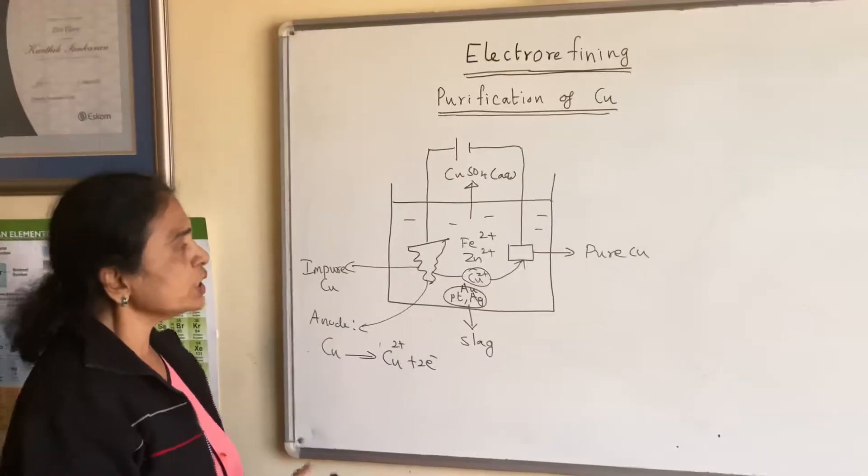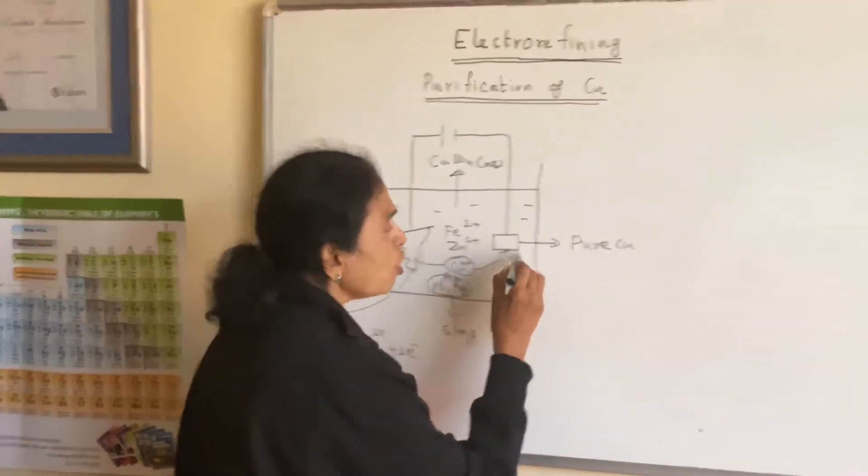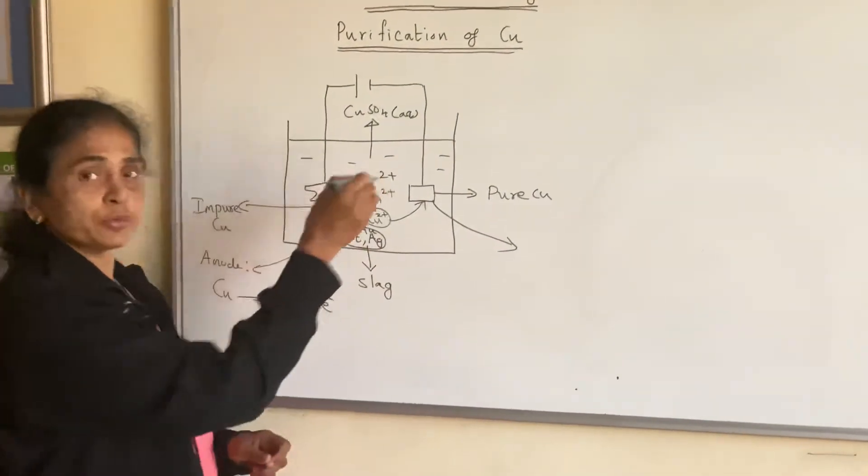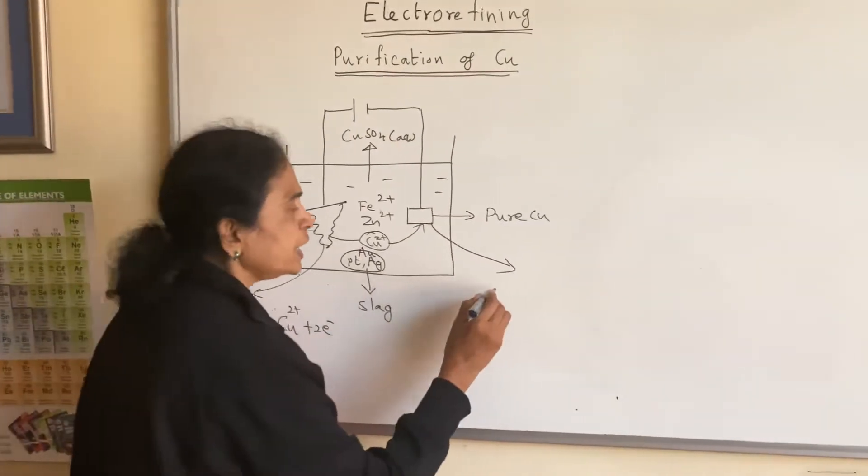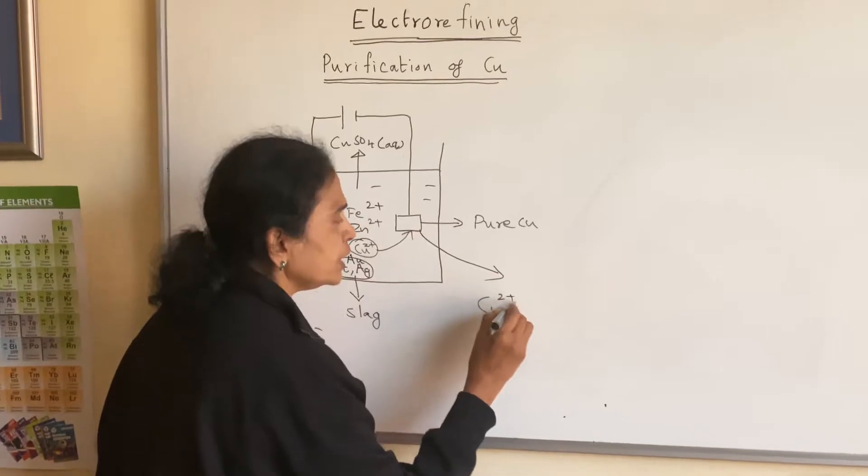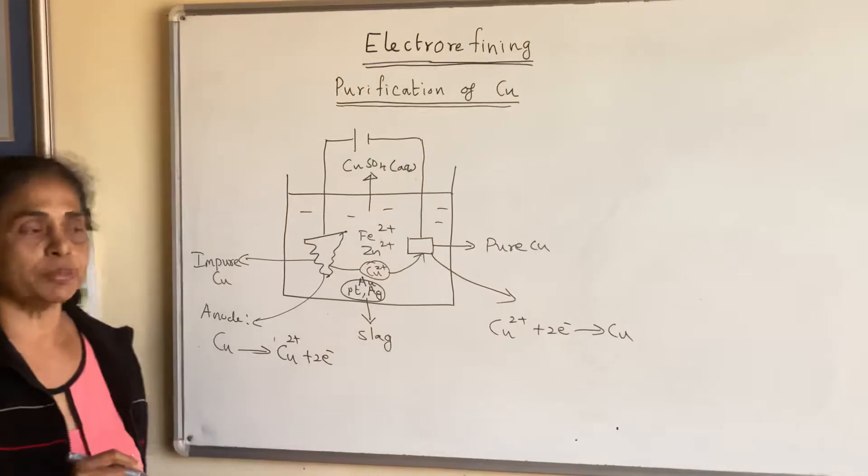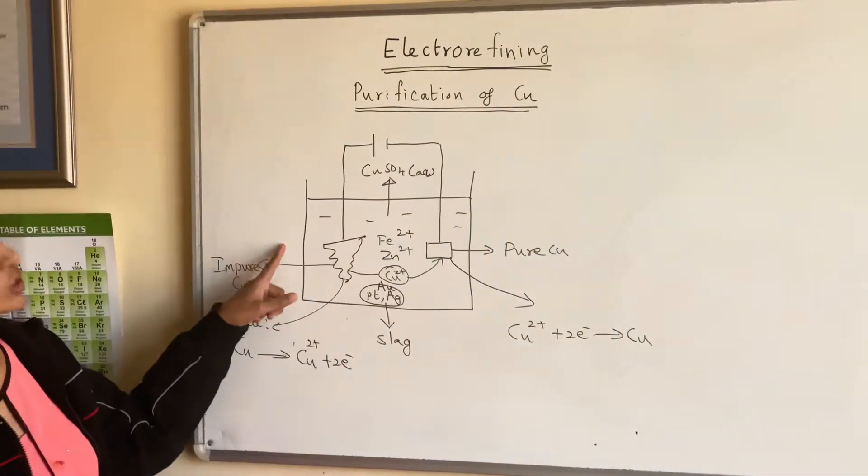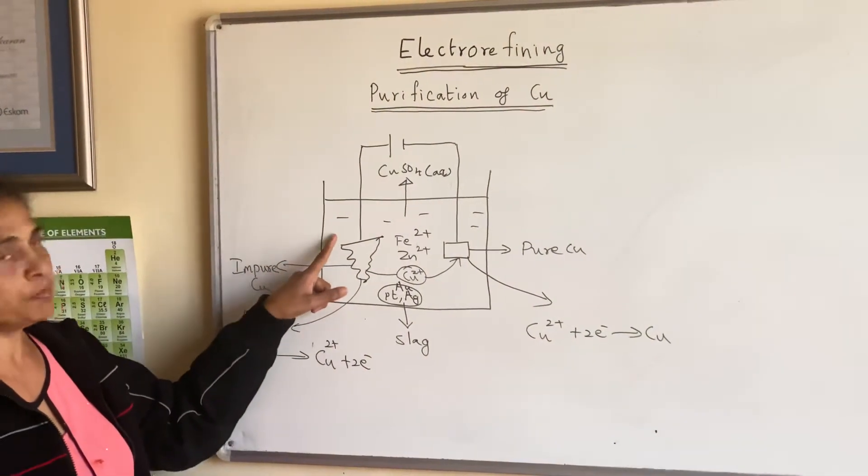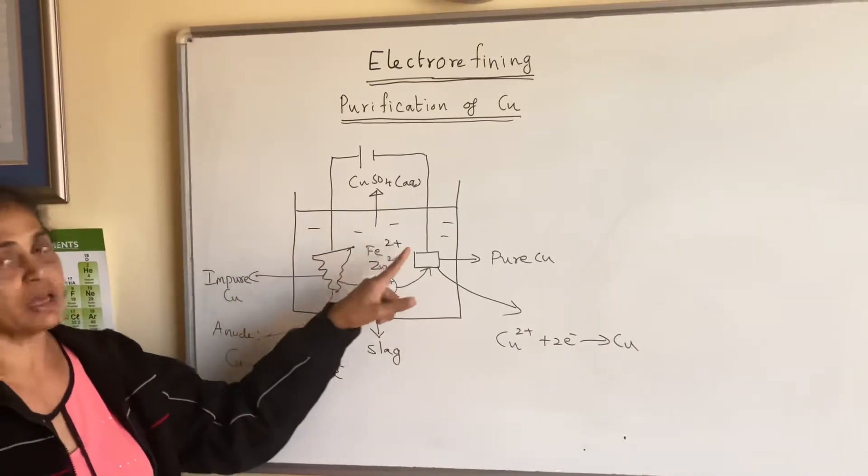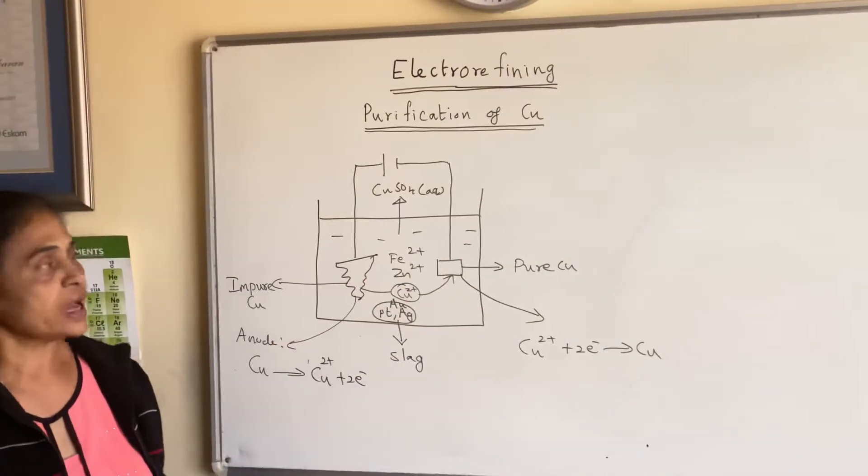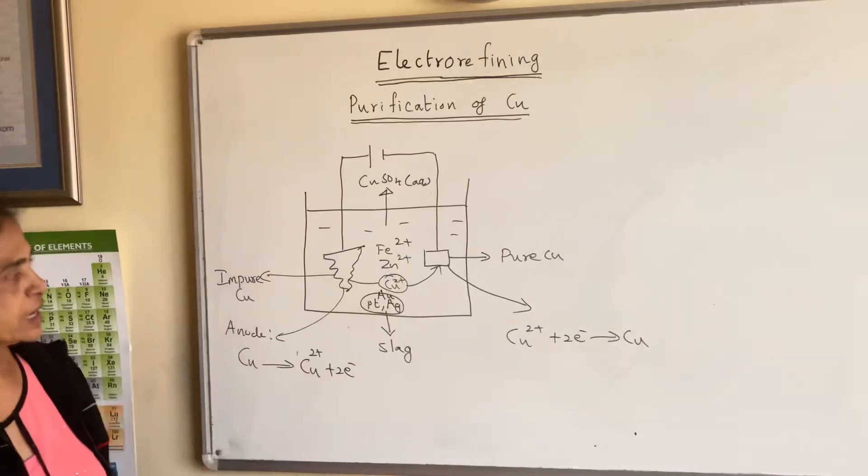So what happens at cathode? All the pure copper—the copper that came from the impure one—they undergo reduction and they form copper. Here, the rate of oxidation of copper at anode is the same as the rate of reduction at copper two plus at cathode.